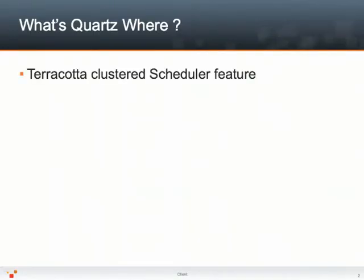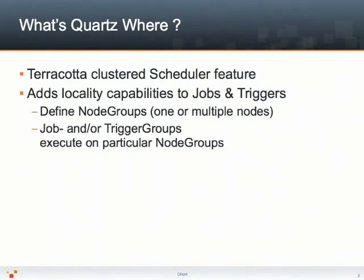What's Quartzware? Quartzware is a Terracotta clustered scheduler feature which adds locality capabilities to your jobs and triggers. By simply defining node groups composed of one or multiple nodes of the cluster, jobs can then be executed on particular machines depending on their group or the trigger group actually firing them.